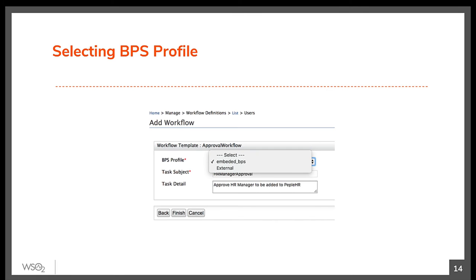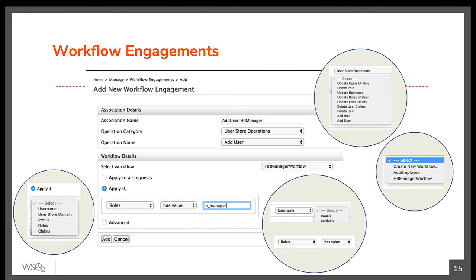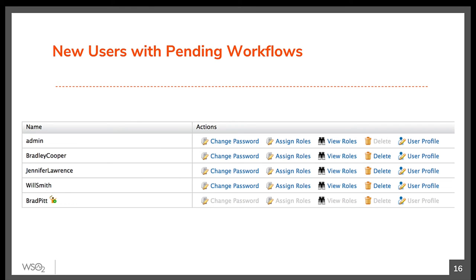When creating a workflow definition in the system, this is where you select the WSO2 BPS profile to be used. Once a workflow definition is created, you can engage that workflow to an operation. The identity server out of the box supports workflows only for user store operations. Once you pick the operation category and the operation name, you can select the condition to apply the workflow — either for all requests belonging to the operation, or filtered by certain values of the input parameters, or via an XPath evaluated dynamically on the operation payload. These options allow workflows to be triggered based on runtime dynamic values of an operation. If a workflow is triggered for a user creation, then that user name is listed with a special symbol indicating the operation is pending approval. All the options against the user are grayed out. If the operation was approved, this entry becomes normal. If the operation was denied, the entry is removed from the listing.